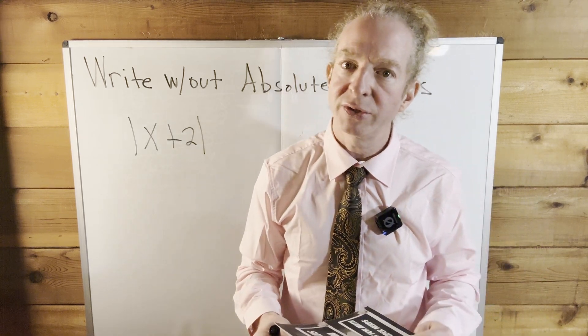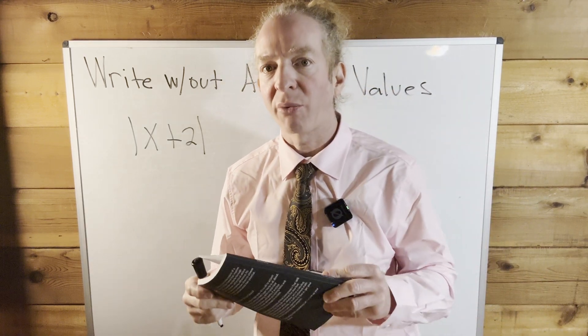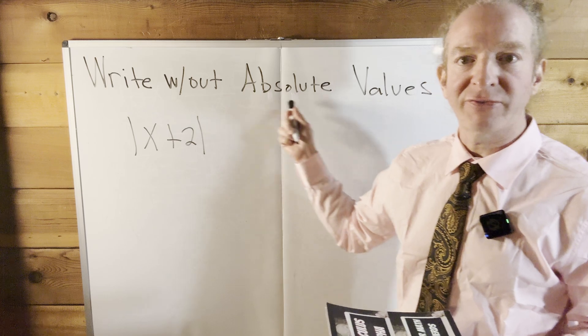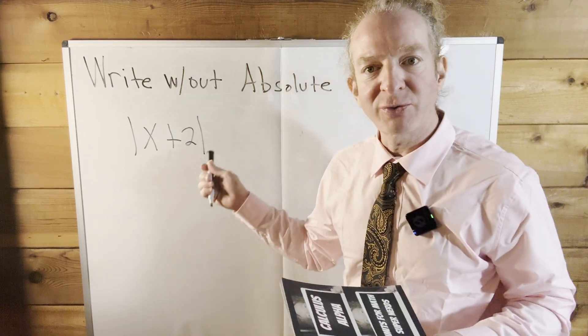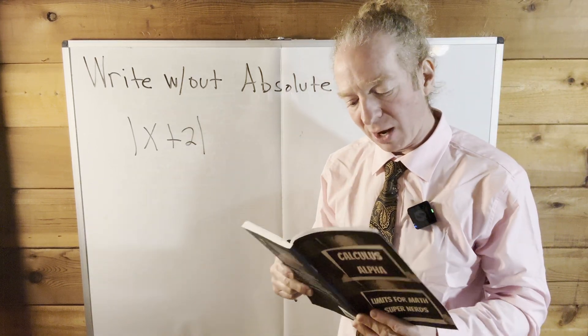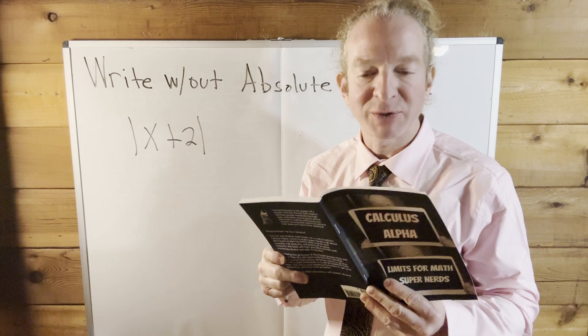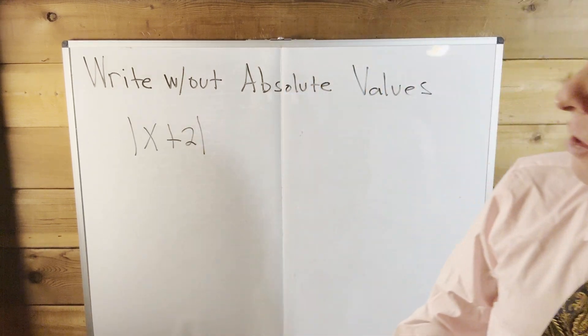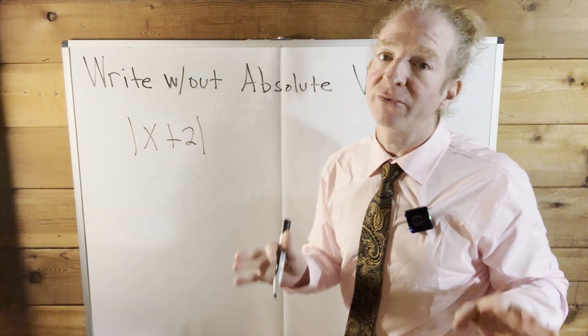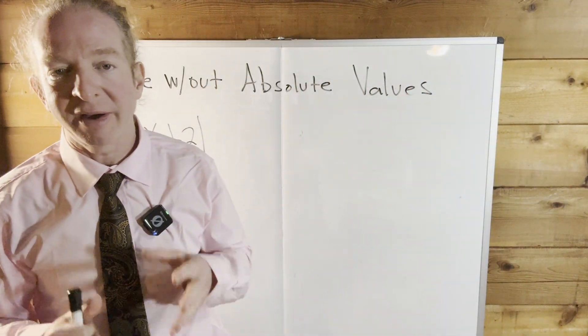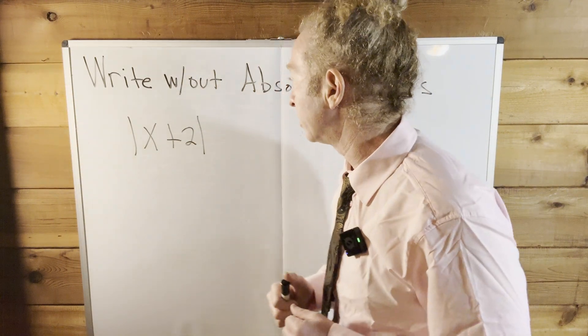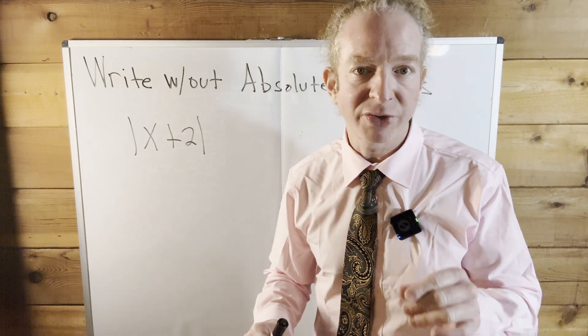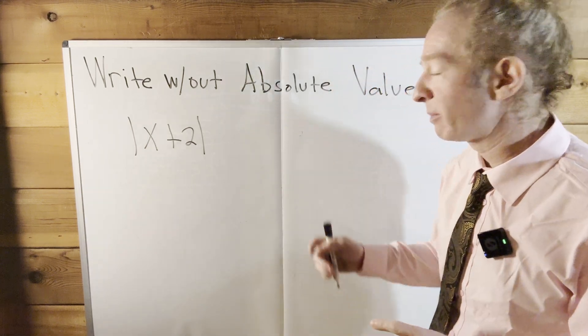Hi. In this video, we are going to do an example of writing without absolute values. We have the absolute value of x plus 2, and we're going to write without absolute values. This is from one of my books, Calculus Alpha. Getting rid of absolute values is very important, especially when you're studying calculus. To do that, you want to know the definition of absolute values.